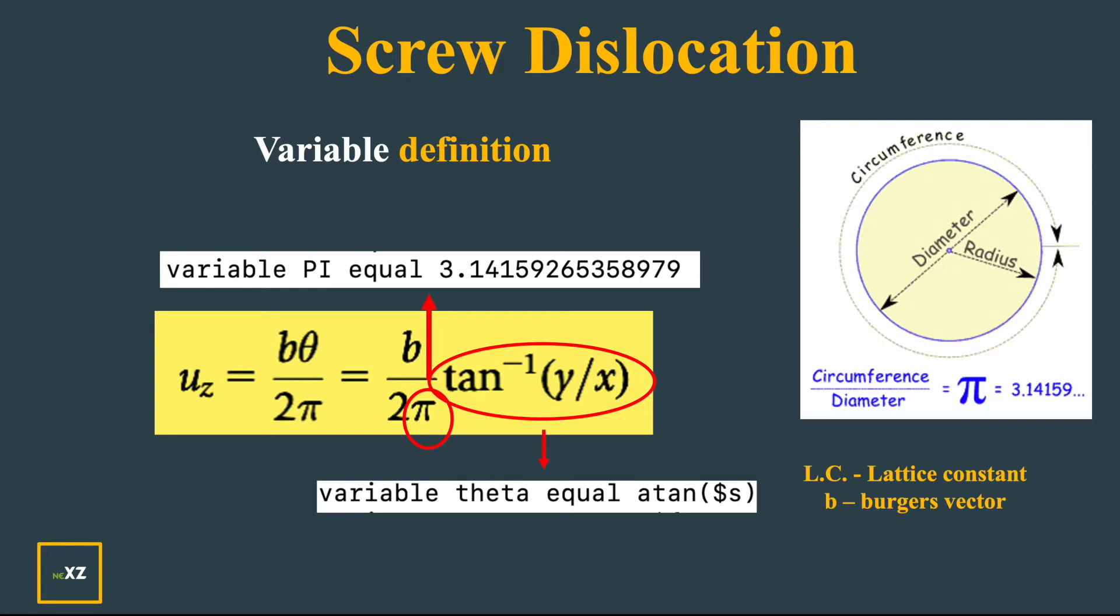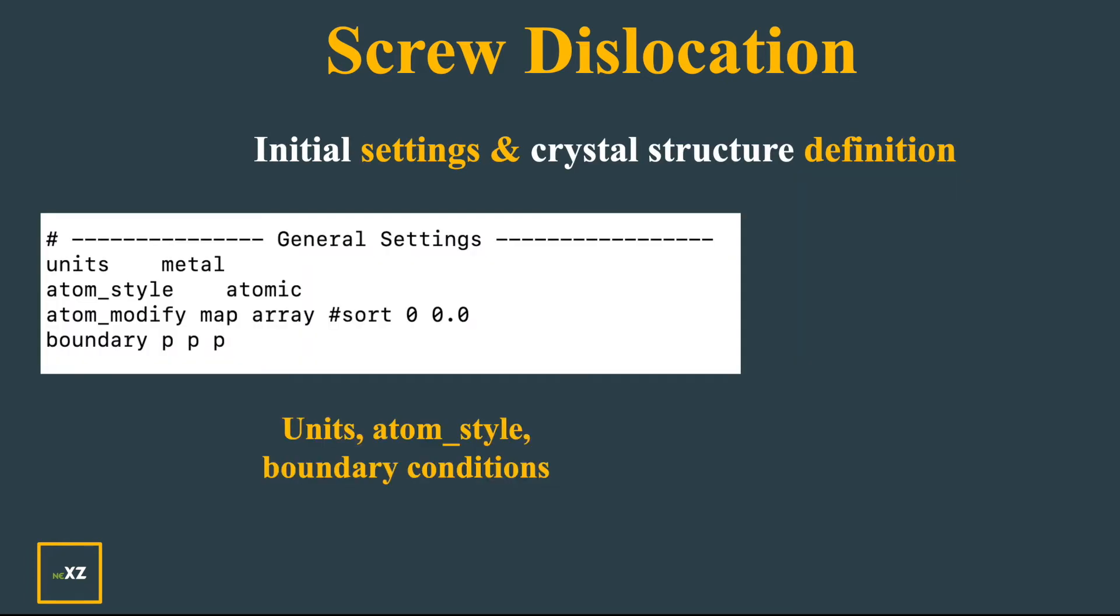Now I give the initial settings: the units, atom style, and the boundary conditions which are periodic in all three directions. Obviously the dimension is three dimensional.